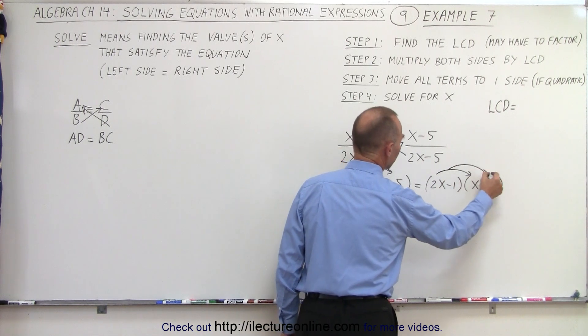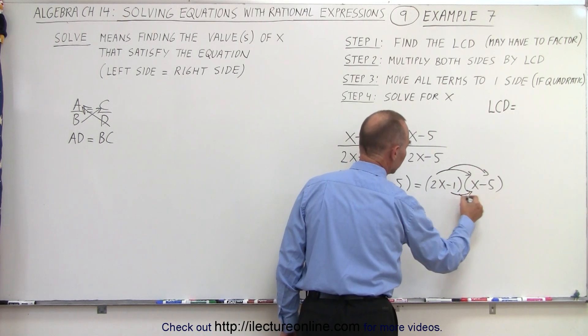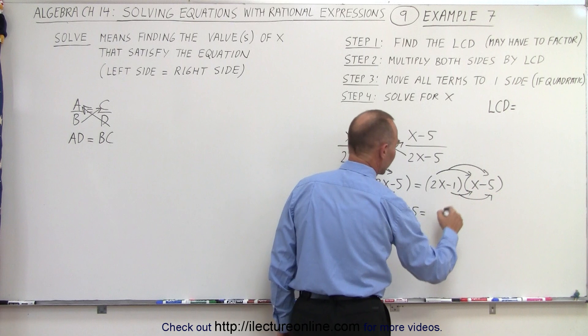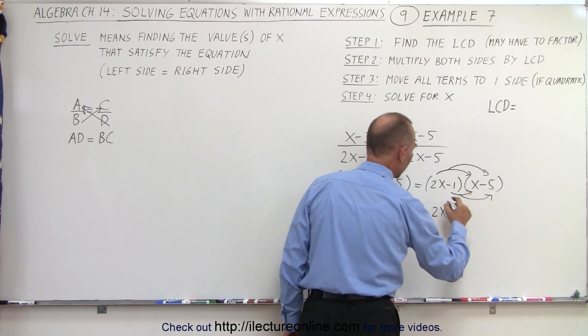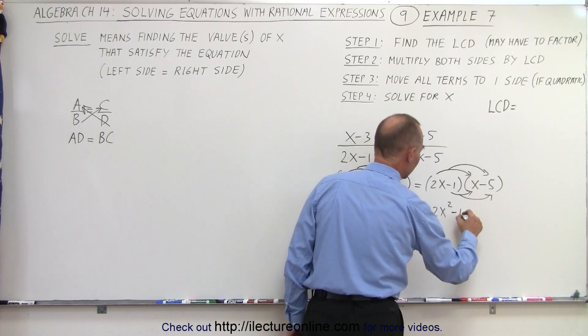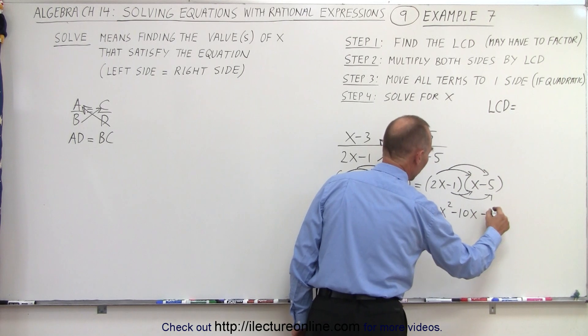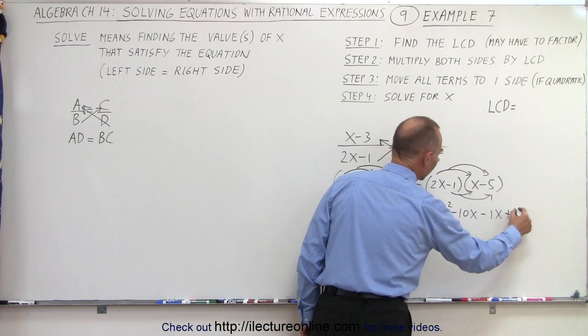we have 2x times x, which is 2x squared, minus 10x, minus 1x, and plus 5.